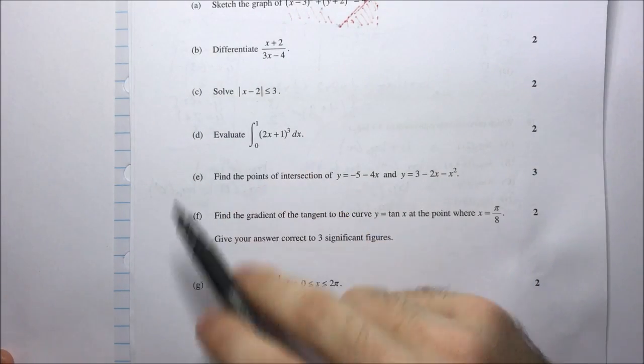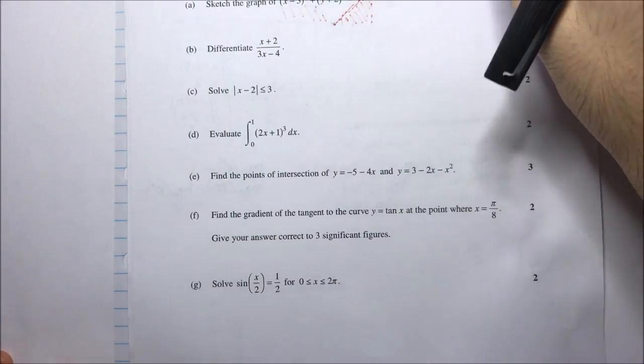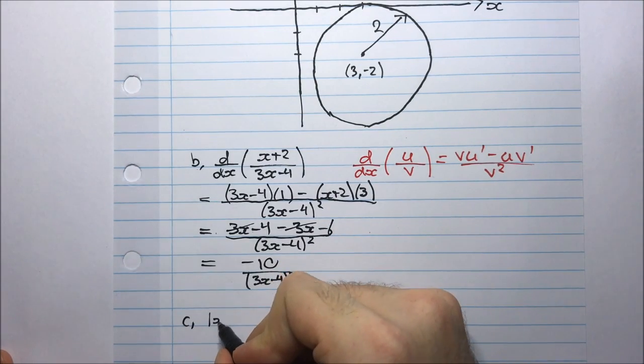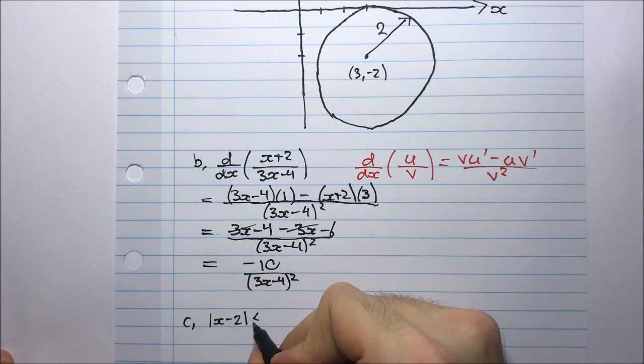Part C. Solve |x - 2| ≤ 3. |x - 2| is less than or equal to 3.